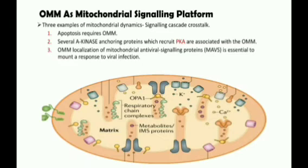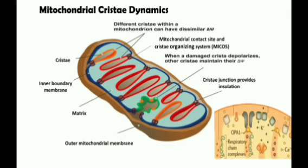Overall, the outer mitochondrial membrane can truly be regarded as the platform of mitochondrial integration within cellular signaling. Mitochondrial cristae are dynamic structures that adapt their architecture in response to physiological inputs and in pathology. The organization of the inner mitochondrial membrane into cristae — also known as cristae biogenesis — is a complex process with multiple players.